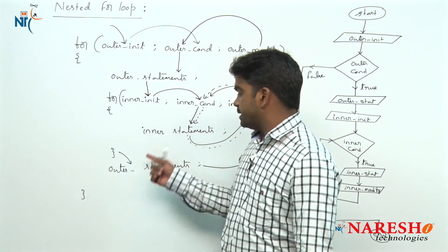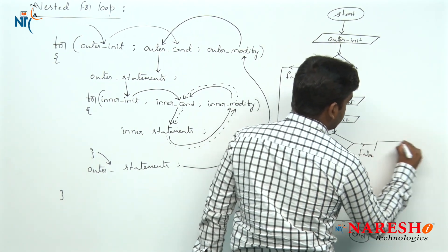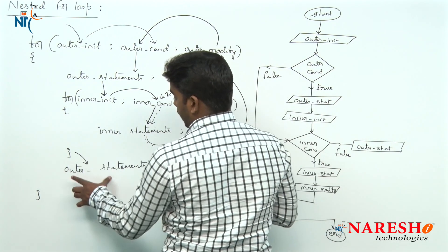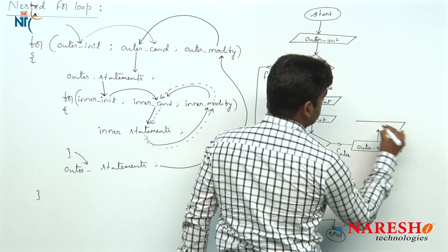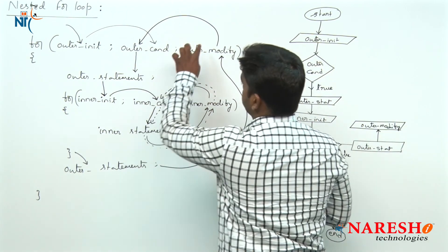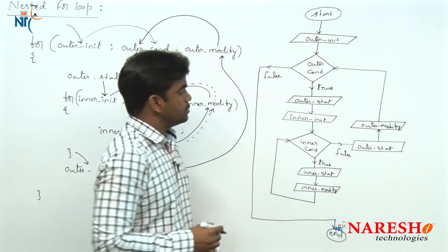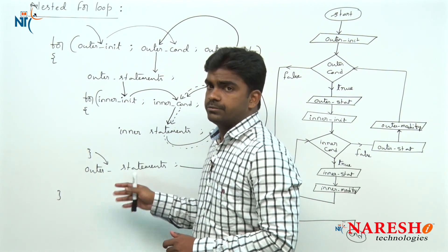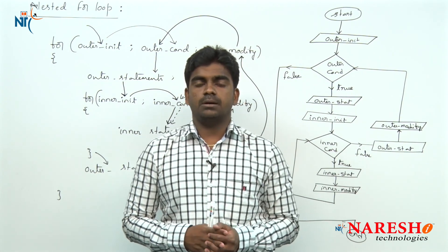If the inner condition has failed, remaining outer statements execute. After outer statements, it will go and execute outer modify, and after outer modify the outer condition is checked again. This is the flow of the nested for loop — this is the syntax and the rules we need to follow while defining a nested for loop, and this is how the nested for loop executes in the application.